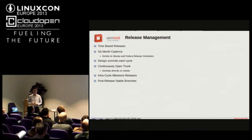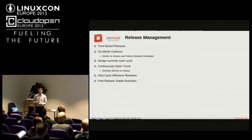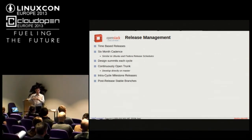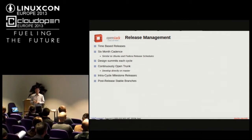We also have codenames for our releases named for the geographic locations where we have design summits — again, something we borrowed from Ubuntu. Every six months, right after a release, we all get together and try to figure out what we're going to be doing for the next six months. We try to make the most of that by coming up with plans for the kind of work we want to do, then we all sit down in a place for about four days and go into those plans in detail. By the end of that, we should know what we're going to be working on for the next six months.